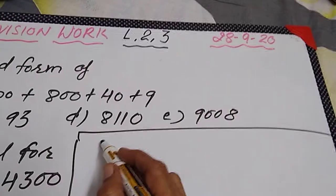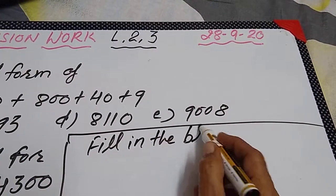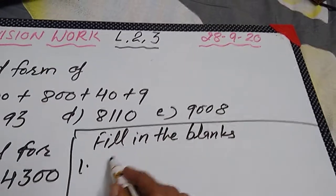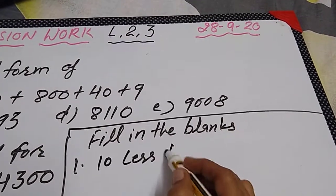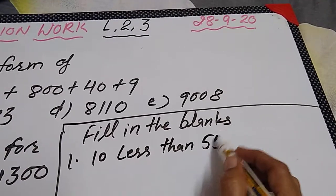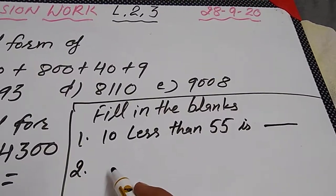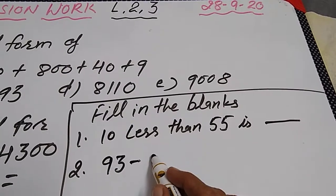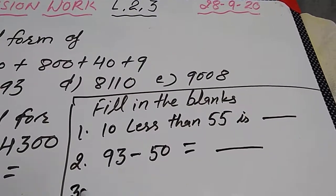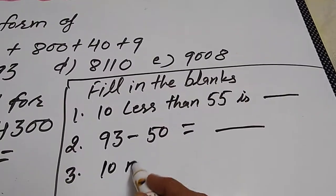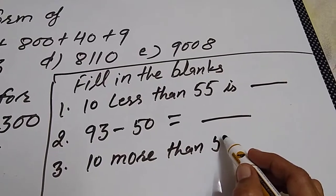Fill in the blanks. 1: blank is 10 less than 50. Write which is right. Second one: 93 minus 50. Write here. Now third: 10 more than 59.